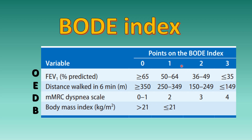It has points ranging from 0, 1, 2, and 3. FEV1 more than 65% is considered normal and scored 0. Distance walked more than 350 meters is scored 0. MMRC scale 0 to 1 and body mass index more than 21 are also scored 0.